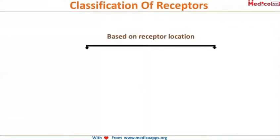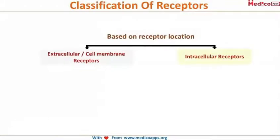Based on their location, we have already seen there are two types of receptors: extracellular or cell membrane receptors, and the other one present inside the cell, that is the intracellular receptors.